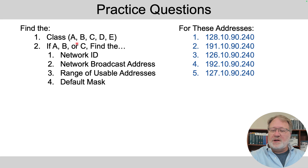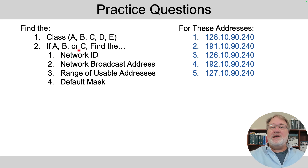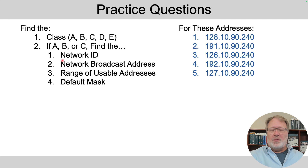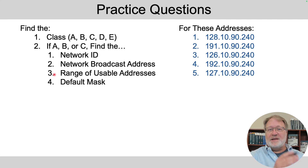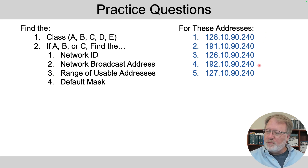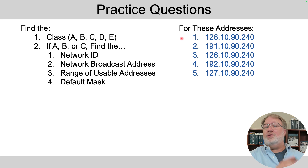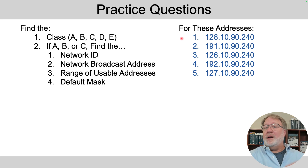I want you to figure out the class — A, B, C, D, or E — and if it's A, B, or C, then based on that address you can figure out the network ID, the network broadcast address, the range of usable addresses, and the default mask. That's the ask, and I want you to do that for these five problems on the right. You can hit pause now and go do it, but I'm going to show you an example just to remind you.